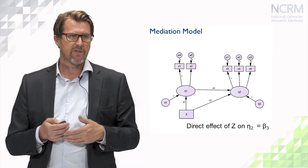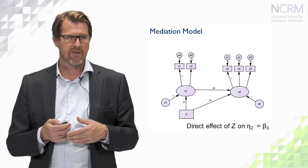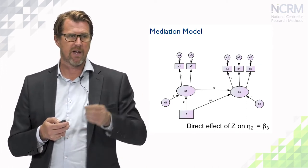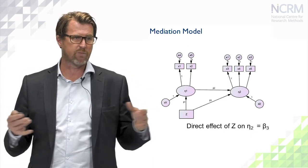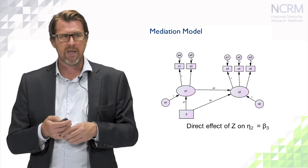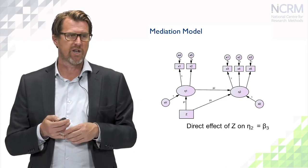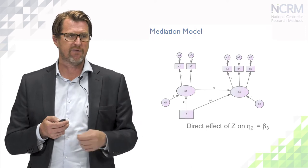First of all, the direct effects of z on eta2 is the beta weight beta3 here, the direct path. So that's what we would normally be focusing on in a regression equation, that direct effect.